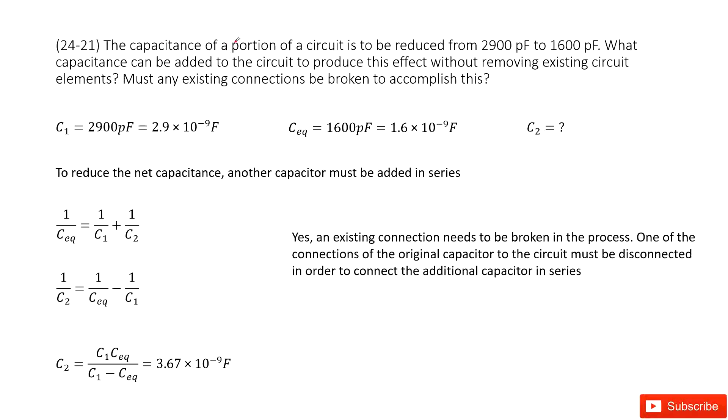It tells us the capacitance for a portion of circuit is to be reduced from 2,900 picofarads to 1,600 picofarads. So from this sentence, we can see initially the capacitance, we write it as C1, is 2,900 picofarads.